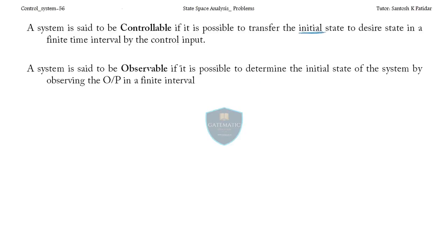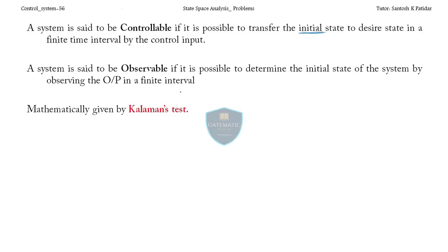For observability, a system is said to be observable if it is possible to determine the initial state of the system by observing the output. Without going deep into detail, I'll come directly to the mathematical form.